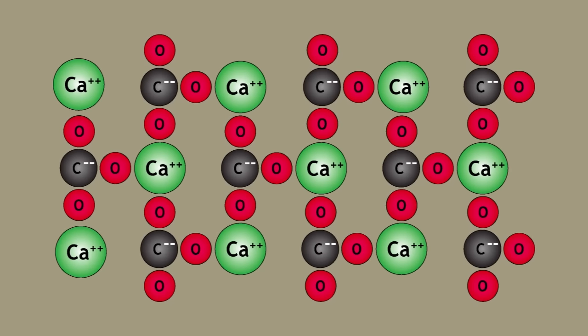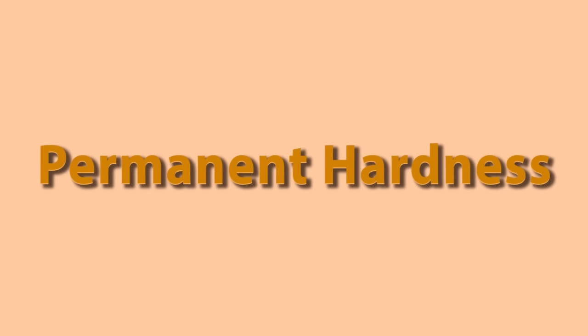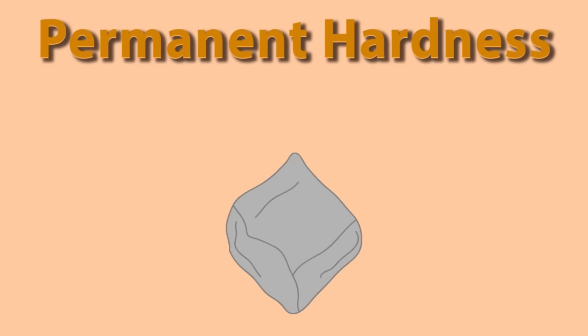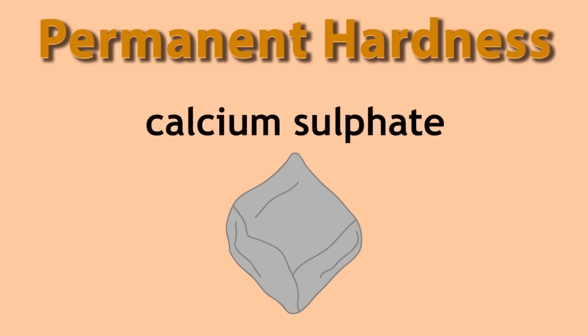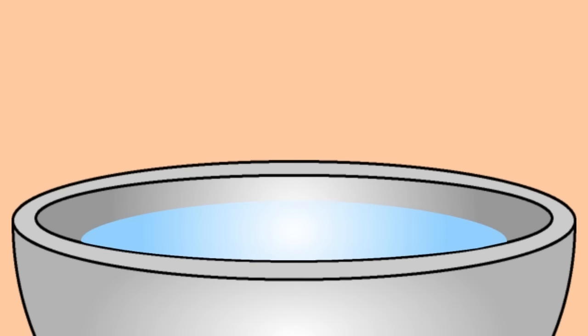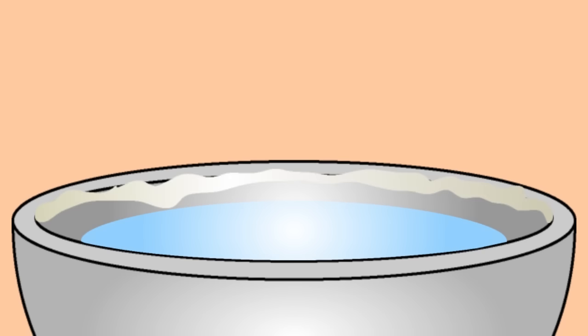Another form of hardness is called permanent hardness, which comes from rocks containing gypsum, which is calcium sulphate. In this case, you do not get lime scale, but you still, of course, get a scum with soap.